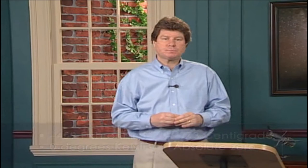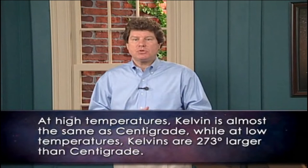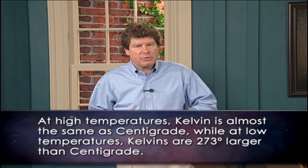This lowest temperature occurs at minus 459 Fahrenheit, or minus 273 centigrade — or, to use the physicist's temperature scale, zero degrees Kelvin. It's also called absolute zero. In these lectures, I'll be using this temperature scale named after the English physicist Lord Kelvin. For high temperatures like the centre of the sun, it's almost the same as centigrade, while at low temperatures, Kelvins are 273 larger than centigrade. Your body, for example, is about 310 Kelvin, or 36 centigrade.